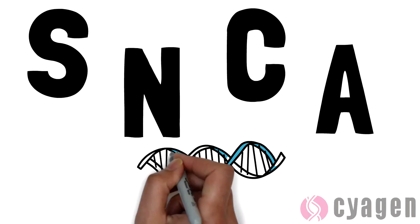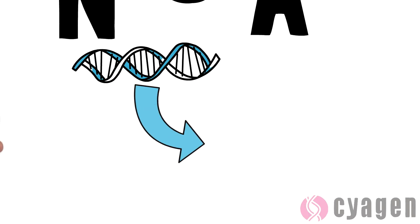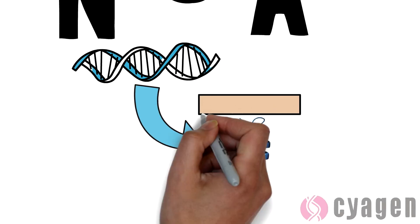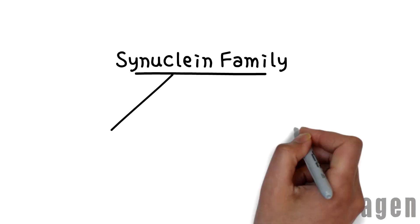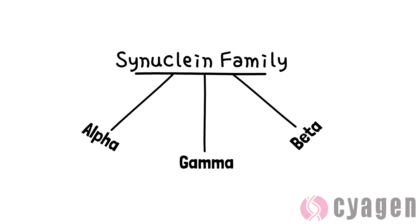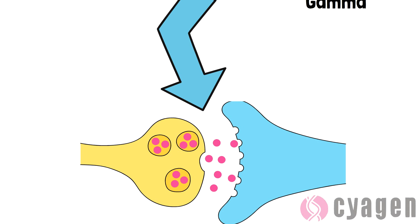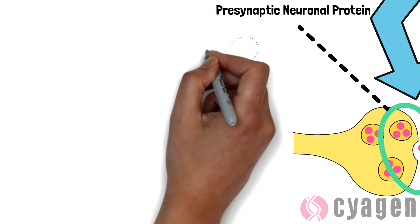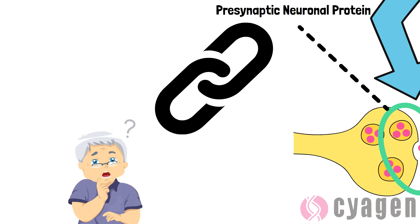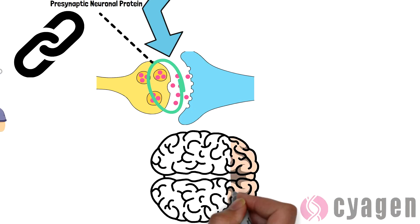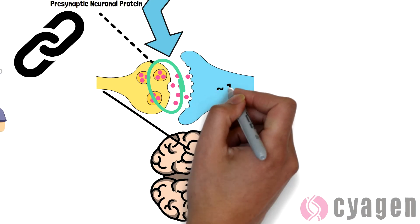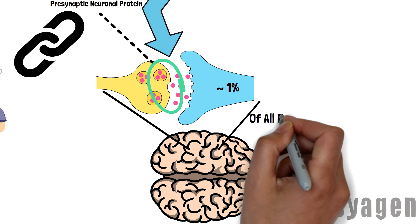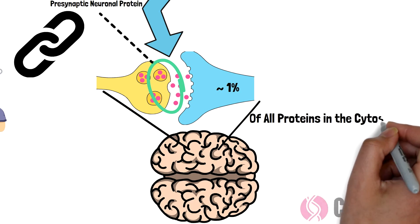The SNCA gene encodes for alpha-synuclein, a member of the synuclein family, which also includes beta and gamma-synuclein. Alpha-synuclein is a presynaptic neuronal protein of unknown function, which is linked to Parkinson's disease. It is primarily found in neural tissue, making up as much as 1% of all proteins in the cytosol of the brain.